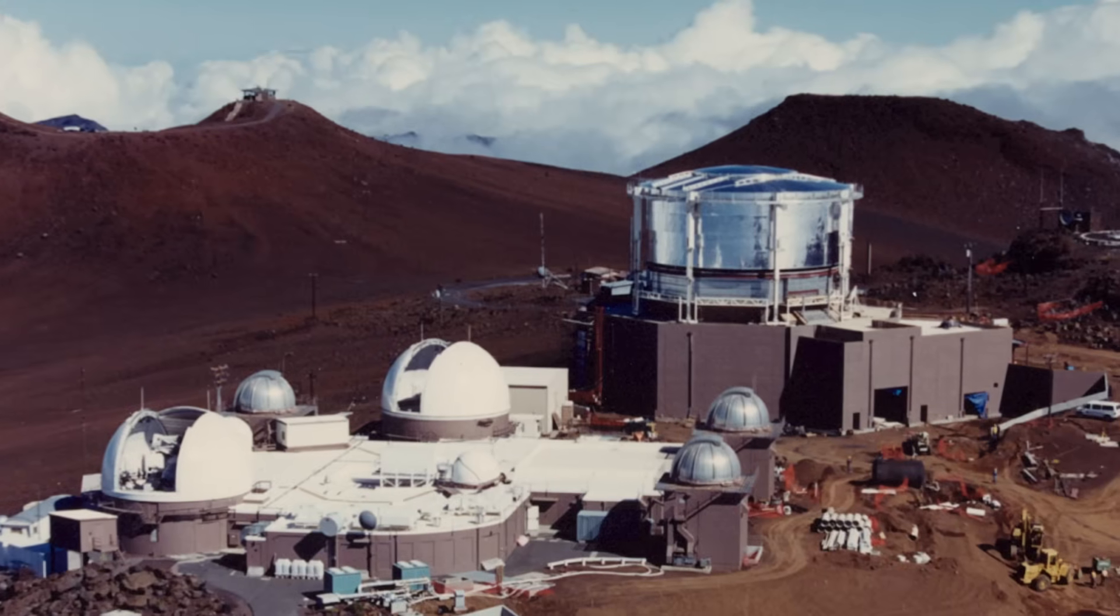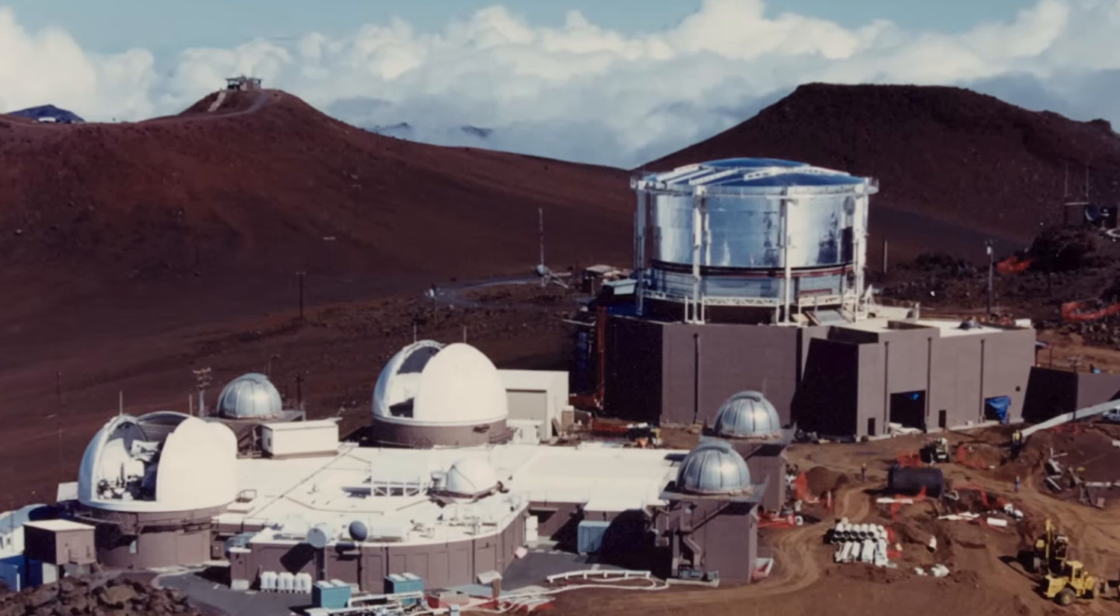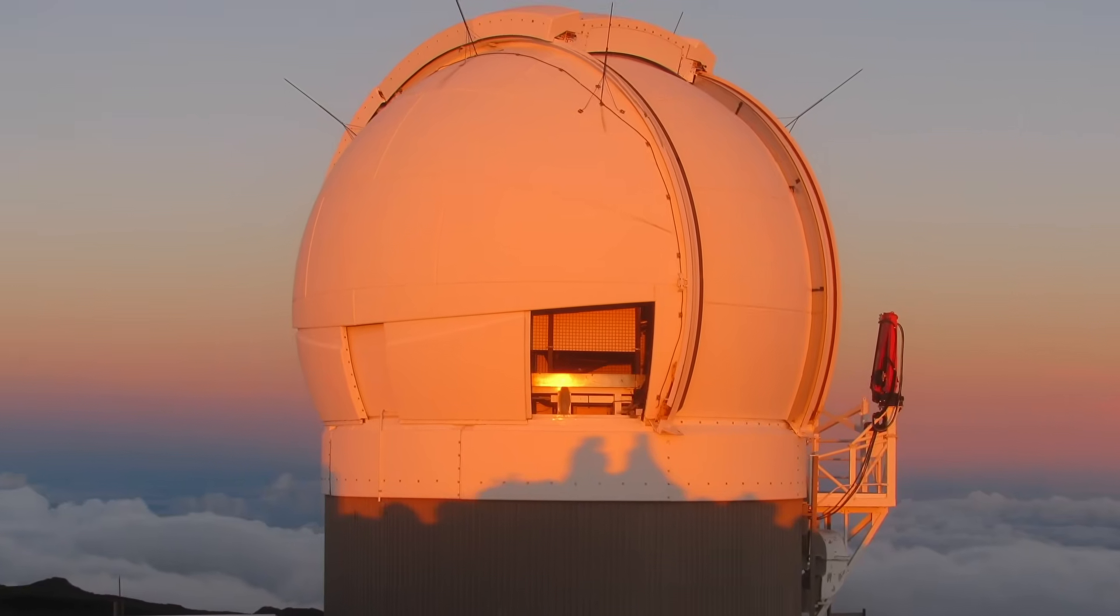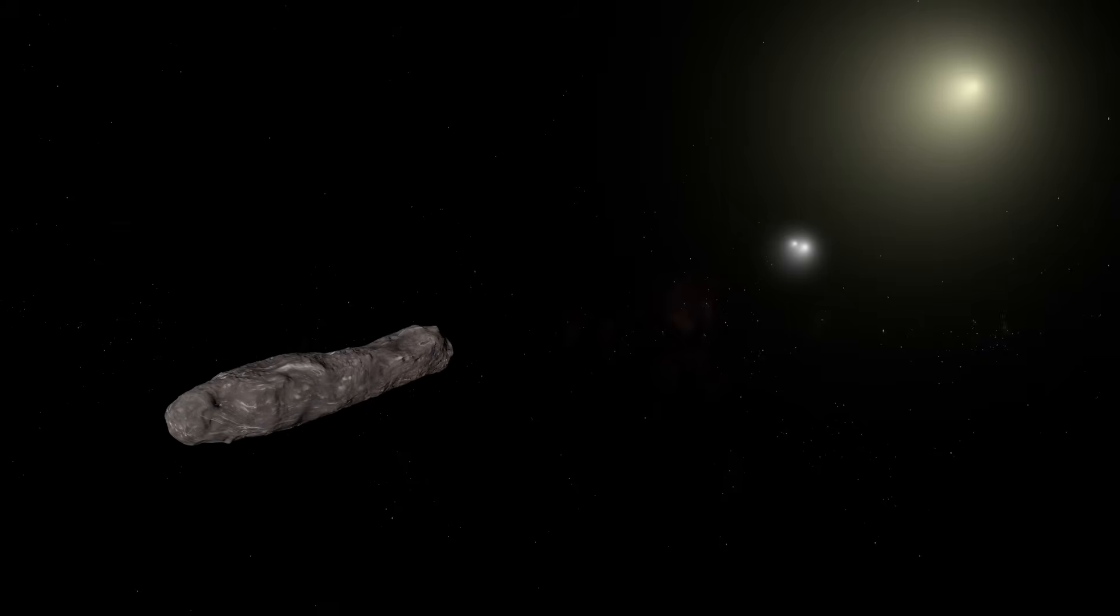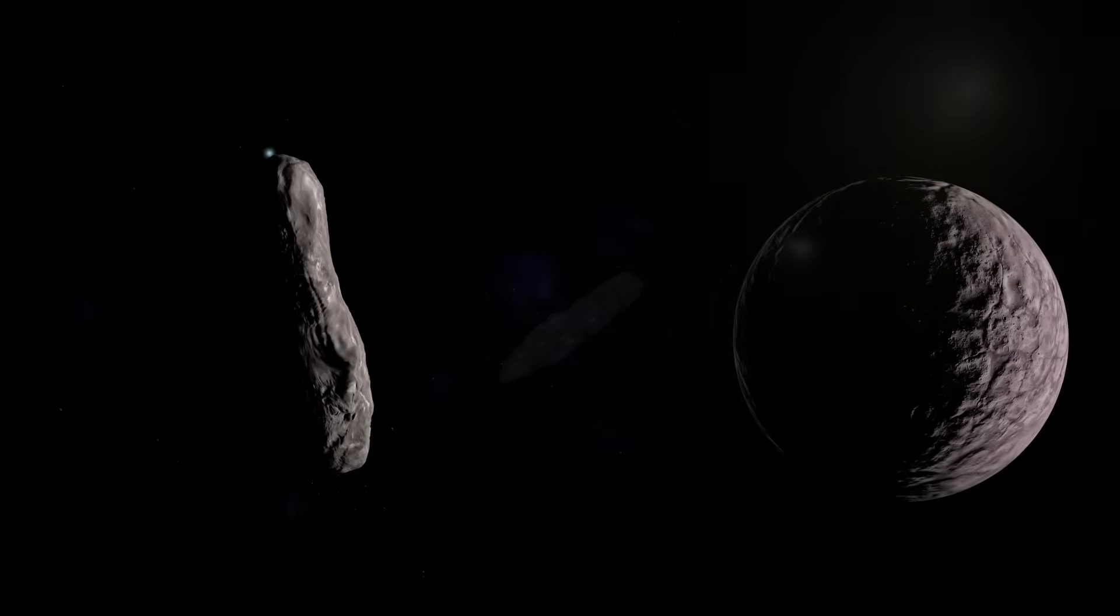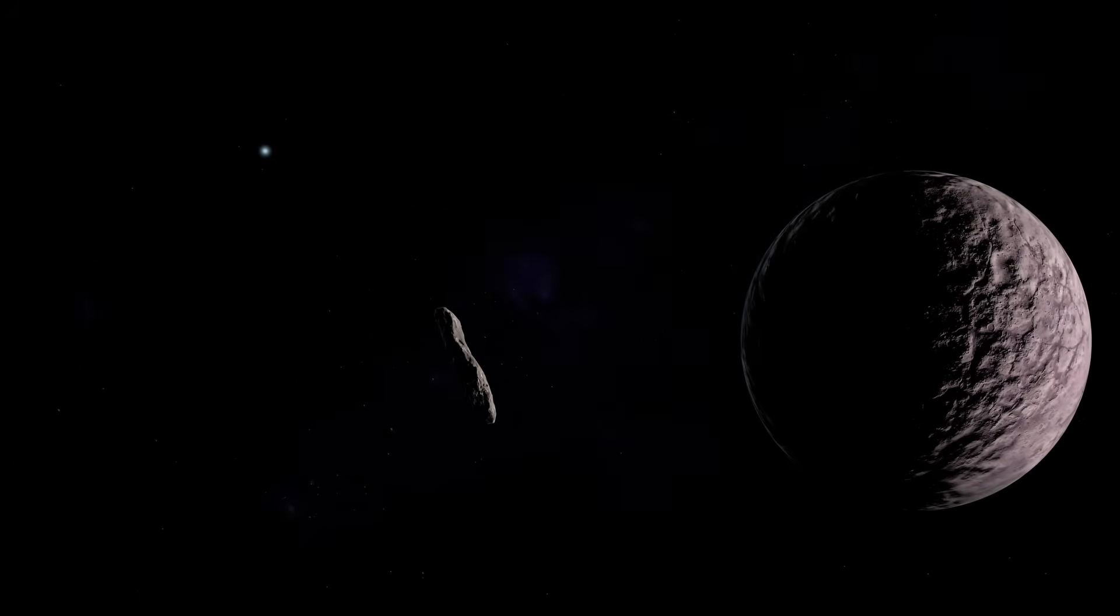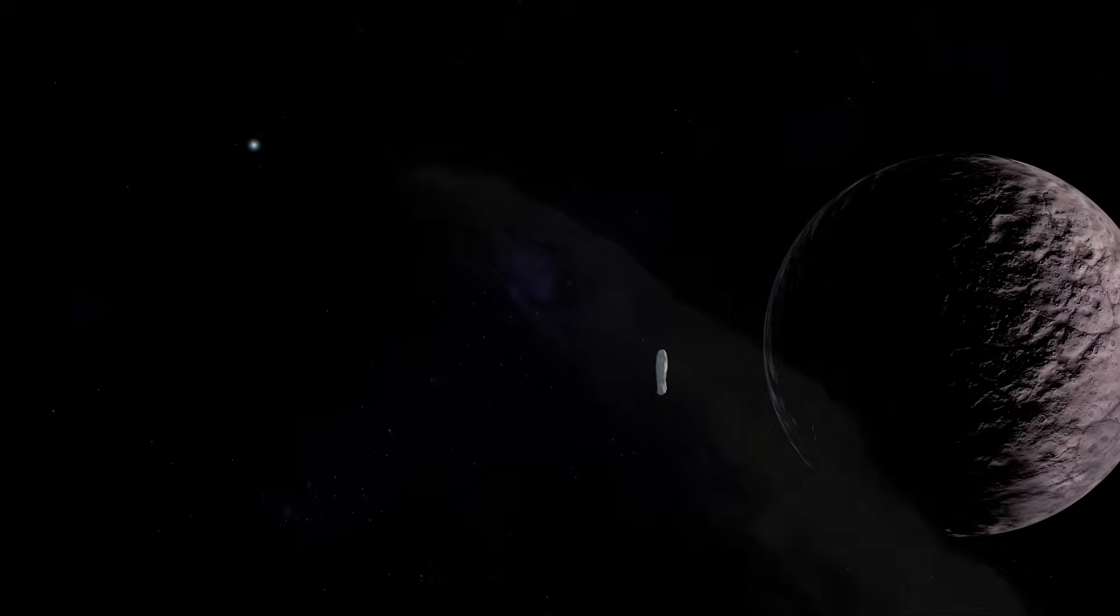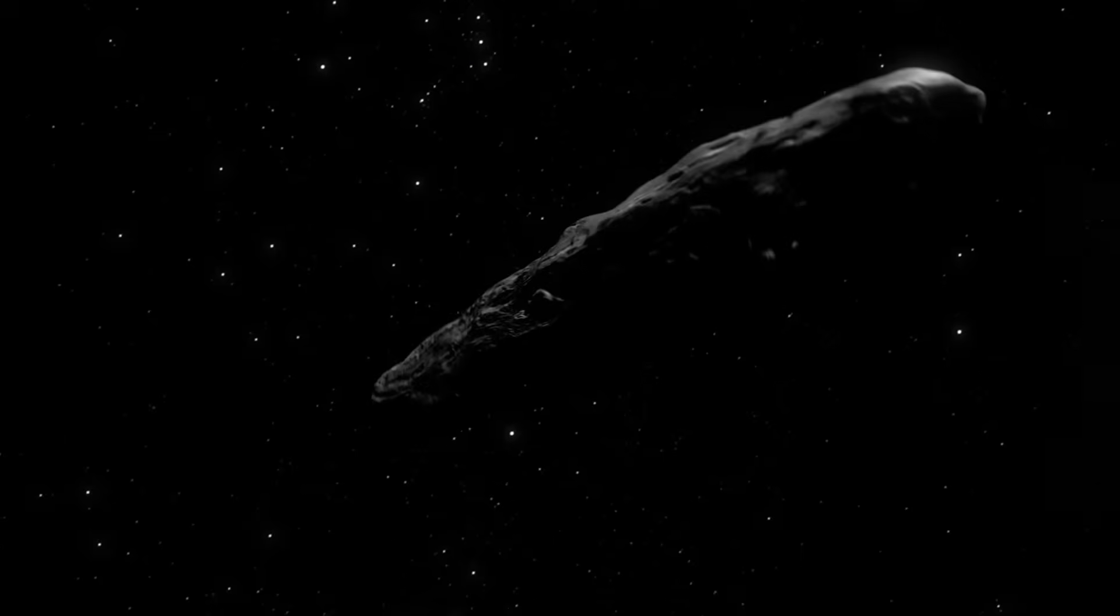On October 19, 2017, at the Haleakala Observatory in Hawaii, a telescope named Pan-STARS picked up something strange. It looked like a faint point of light, moving too fast. At first, astronomers thought it might just be another comet. So they named it C-2017U1. But something was off. There was no coma, no tail, and none of the fuzzy glowing features we expect from a comet heating up near the sun.